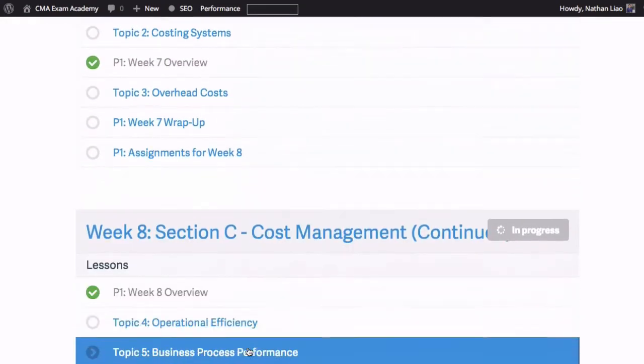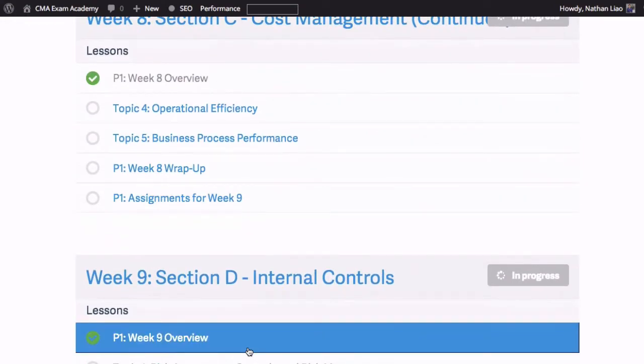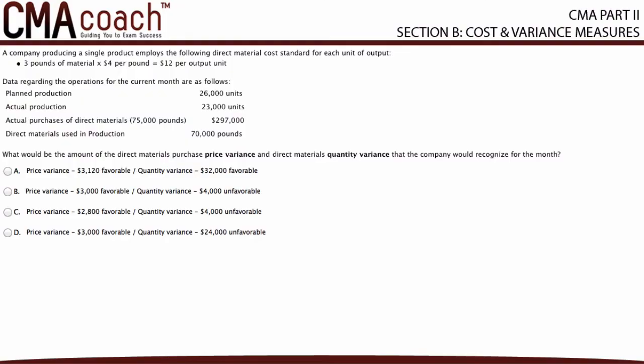Now let's get back to the problem and solve it together. A company producing a single product employs the following direct material cost standard for each unit of output: three pounds of material times four dollars per pound equals twelve dollars per output unit.